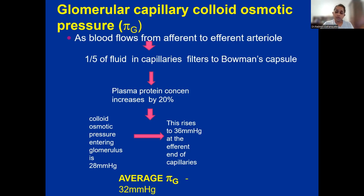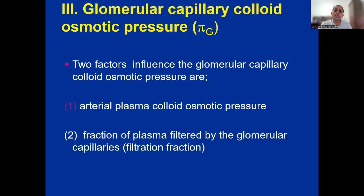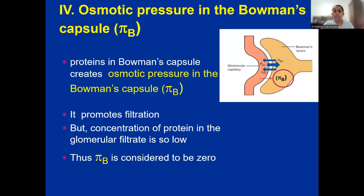The average glomerular capillary colloid osmotic pressure of 32 mmHg arises because one fifth of fluid flows into the Bowman's capsule. This pressure is determined by two factors: arterial plasma colloid osmotic pressure and the filtration fraction. The last Starling force is the colloid osmotic pressure in the Bowman's capsule, which is considered negligible — essentially zero — because proteins, the most important contributor to colloid osmotic pressure, are assumed to be absent in the Bowman's capsule.